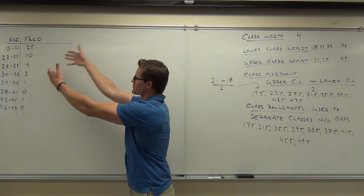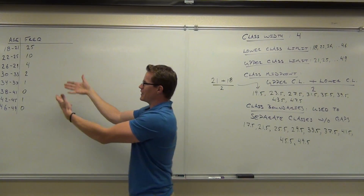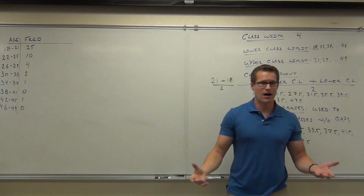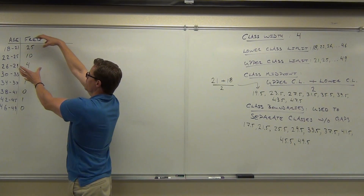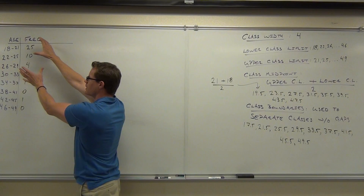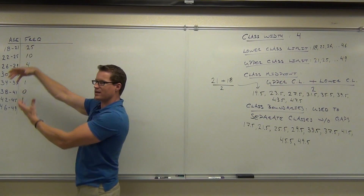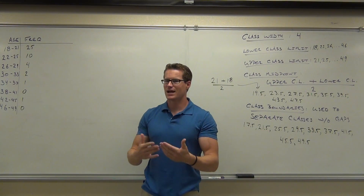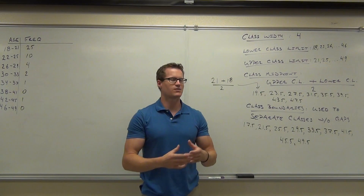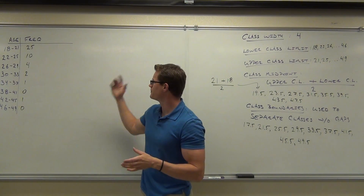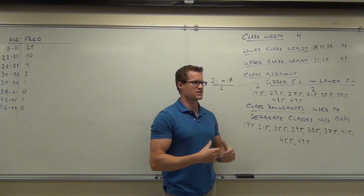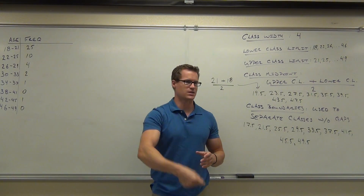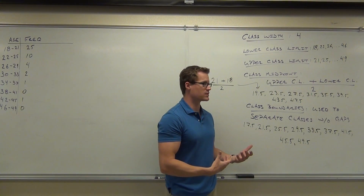So we have all these frequencies for each class. Just by looking at it, you know where the majority of people are. Typically this is what's going to happen in most of your classes — we're going to have people scattered, but they're generally going to be right here, with some people over here. That's what frequency distributions can show: trends and patterns. If we just had everyone's age on a piece of paper, it'd be hard to see trends. Especially if there's lots and lots of data — here we only have maybe 40-something pieces of data.